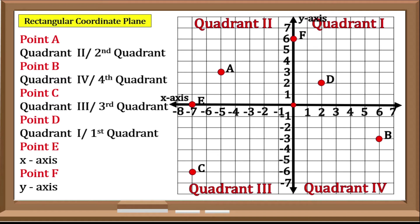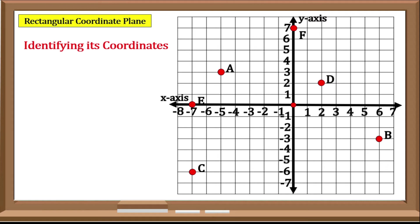Now this time we will be identifying the coordinates of a point with the help of the Cartesian Plane. Always remember that the coordinates of a point consist of X and Y. We need to create a horizontal line along the Y-Axis from the given point, and a vertical line along the X-Axis from the given point.